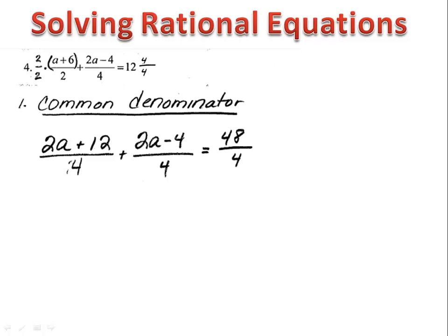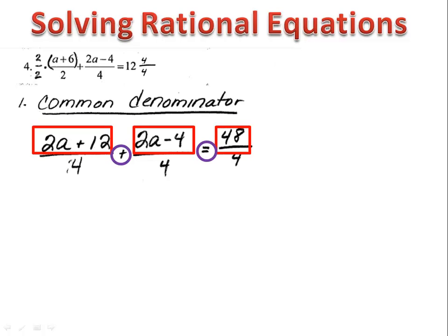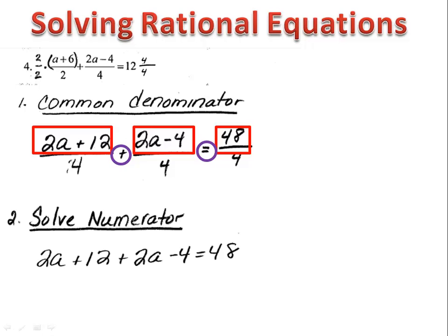Once we've found our common denominator, we simply look at everything that's on the top plus the operators in between. We use that in order to write our equation 2a plus 12 plus 2a minus 4 equals 48. We then solve the equation and when we do that, we find out that a equals 10.